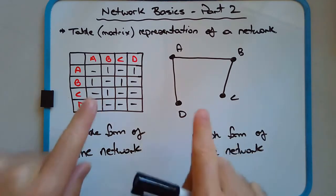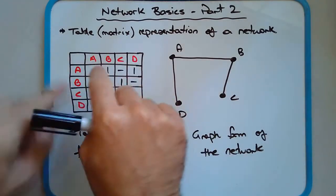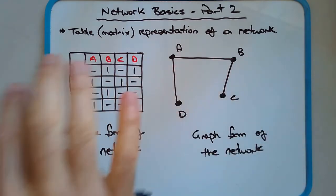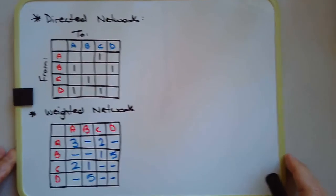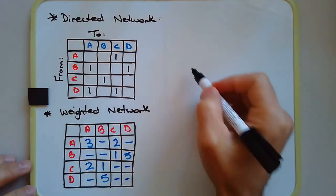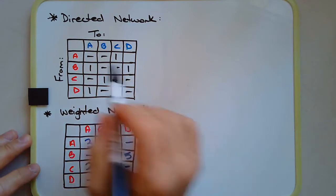Both representations represent the same relationships between these sets of vertices — one drawn as a diagram, one as a table. Now, can we express a directed or weighted network the same way? Of course we can. With a directed network, you have arrows. I'll repeat the same process and use dashes where there are no connections.